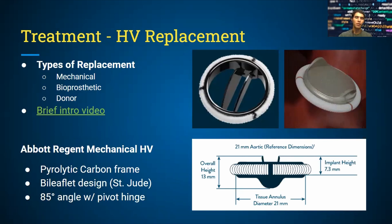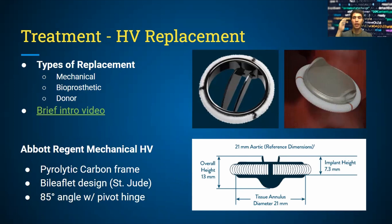Mechanical valves are a popular option — they use stents or mechanical valves made of pyrolytic carbon. Pyrolytic carbon is beneficial because it invites minimal clotting. Since blood interacts directly with heart valves, you don't want it to clot onto the tissue. Bioprosthetic heart valves, on the other hand, are tissue-based.